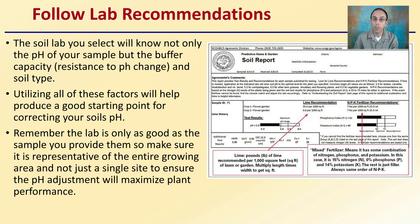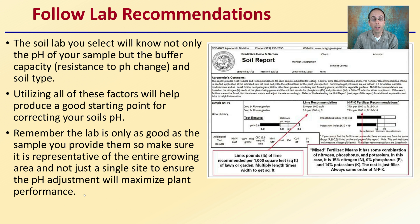Remember, the lab is only as good as the sample you provide them, so make sure it is a representative sample of the entire growing area — not just a single site — to ensure the pH adjustment will maximize plant performance over the entire field. Follow the lab recommendations, as they offer a great starting point, and you can see over time how that soil may react. Sometimes you make a pH correction and it will stay for a number of years; other times you need to constantly retest and make adjustments, because some soils will shift from your target or ideal range.